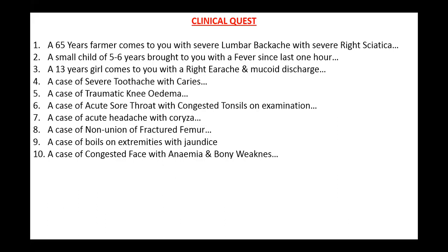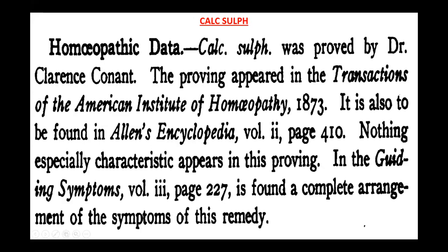Now we go ahead with the remaining part on the relationship of three remedies — Calcarea sulph, Ferrum phos, and Kali mur — because these remedies and their correlation with other remedies are very important. Regarding Calcarea sulph: it was proved by Dr. Conant; the proving appeared in the Transactions of the American Institute of Homeopathy in 1973, and is also found in Allen's Encyclopedia, Volume 2, page 410.